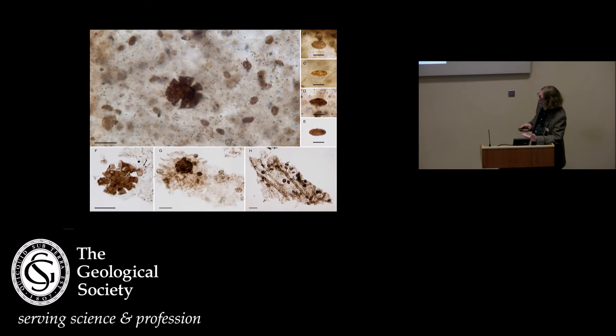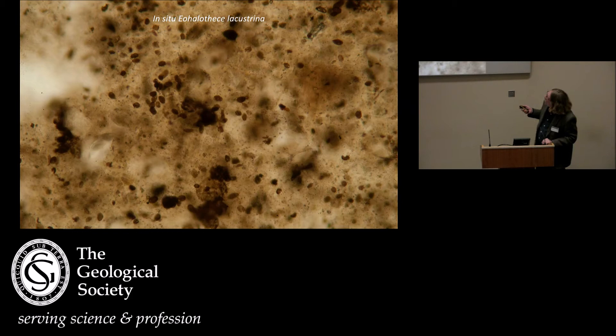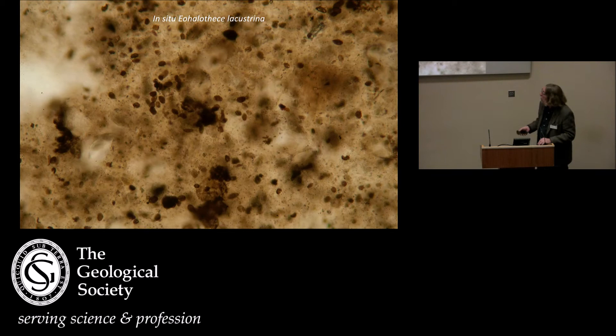These Eohalothece occur distributed within a sort of an organic-rich matrix. The microfossils are about five to seven microns in length. You don't see evidence of cell division or growth patterns or anything like that — they just appear to be kind of distributed throughout the EPS within a particular layer.